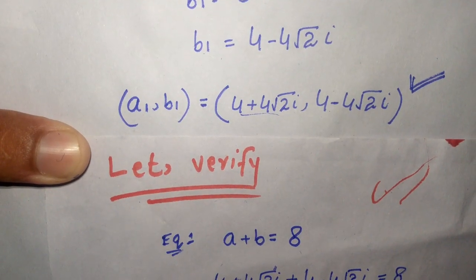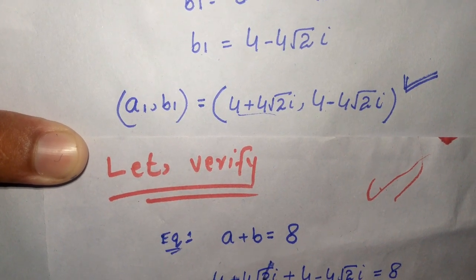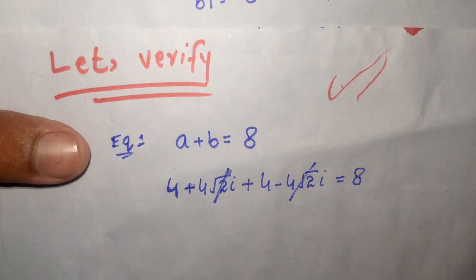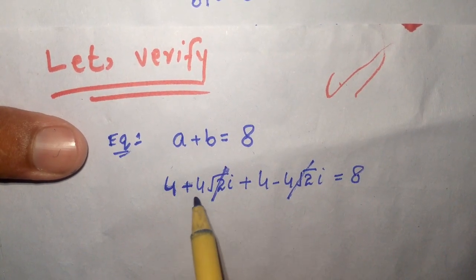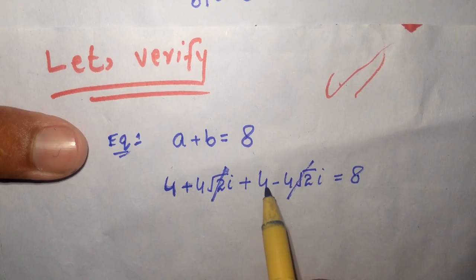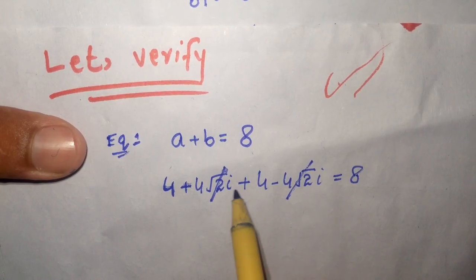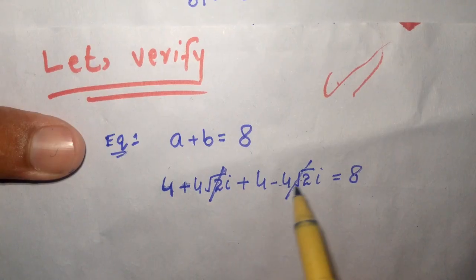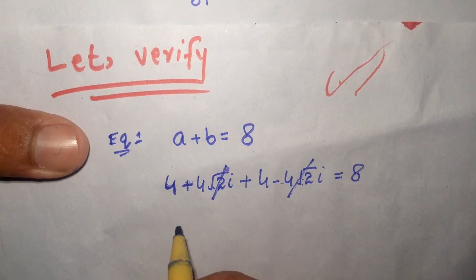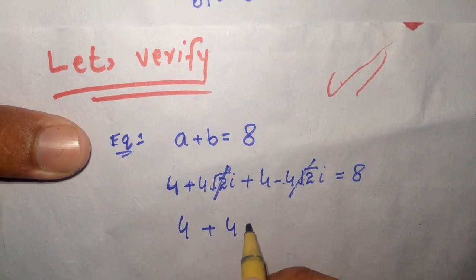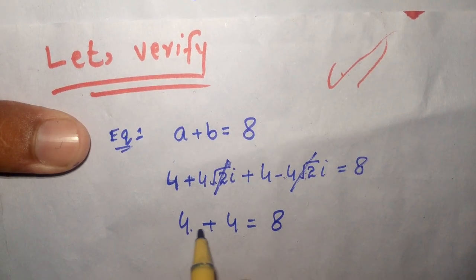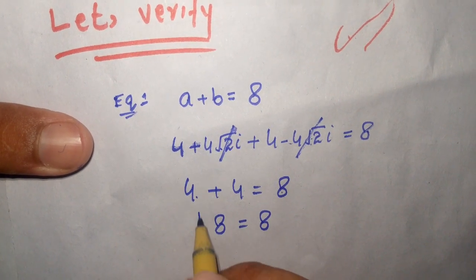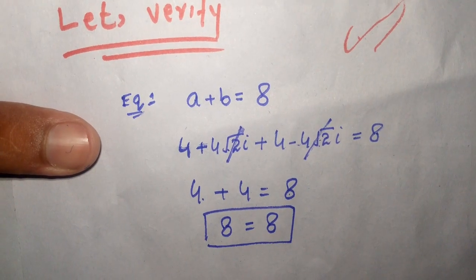The plus 4 square root of 2 i and minus 4 square root of 2 i cancel each other out, leaving 4 plus 4, which equals 8. The left hand side equals the right hand side, which shows that our answer is correct for equation number 1.